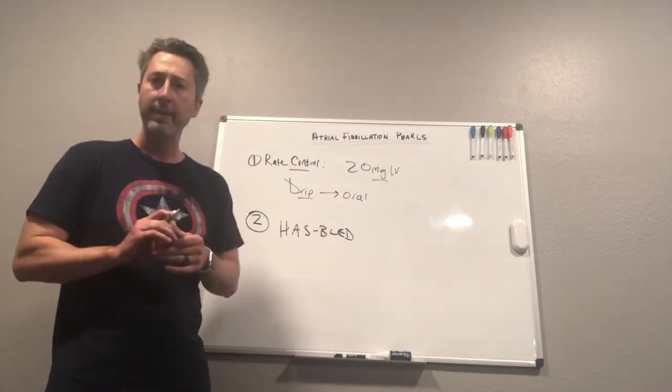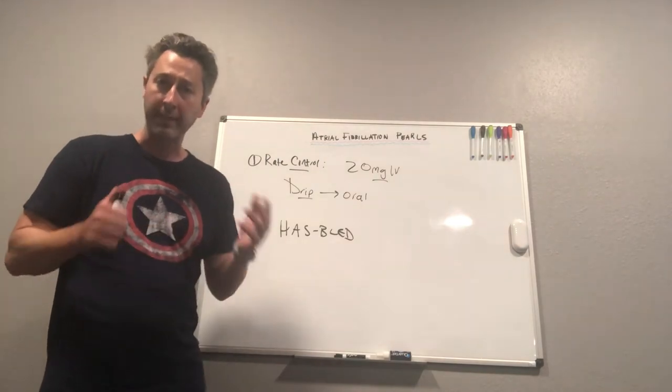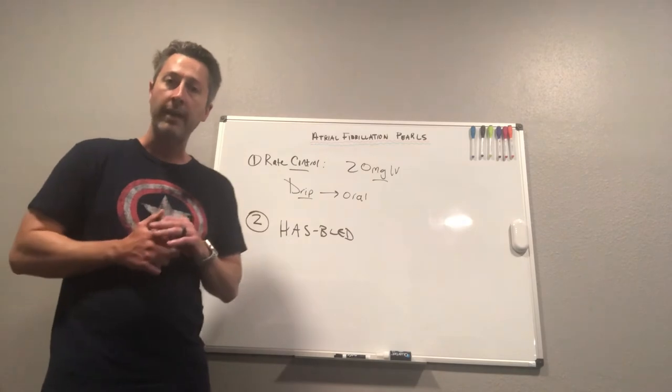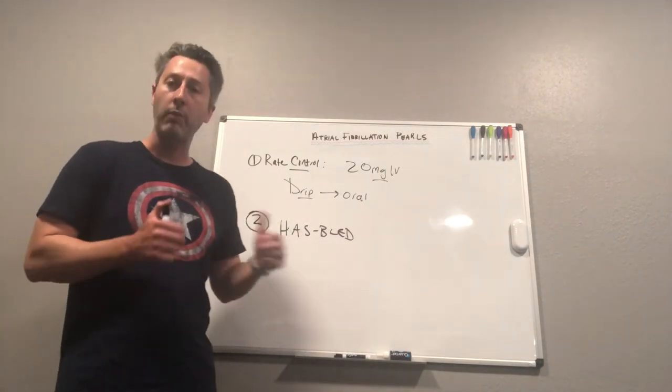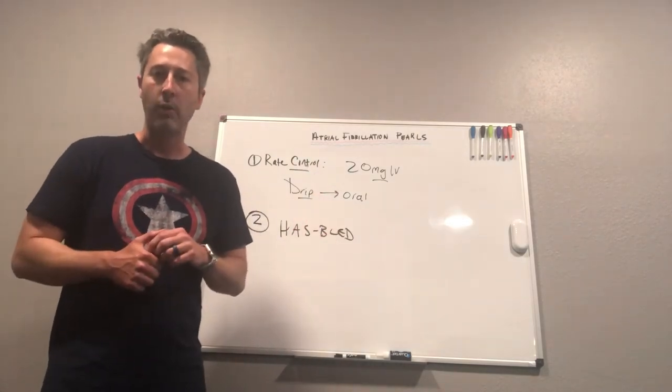But the mistake that I see residents make is we use this has-bled score to say the has-bled score is really high, I don't think that this patient should be on anticoagulation, it's just too high of a risk. When really what we should be saying is the has-bled score is high, it's elevated...